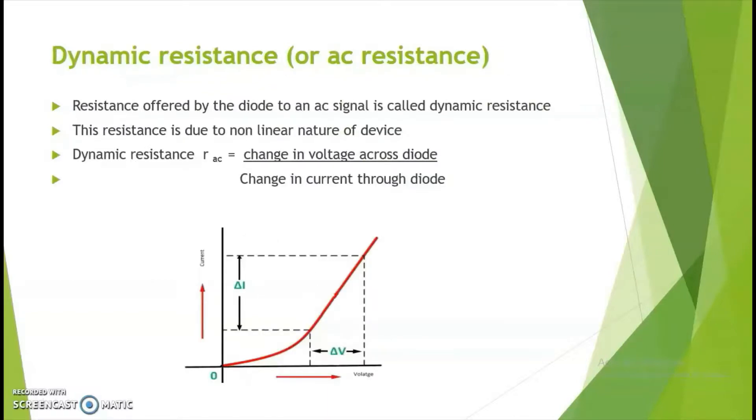Next, we have dynamic resistance or AC resistance which means that there is a change. It is represented by RAC and it is change in voltage across the diode to change in current. So, choose two points of voltage and the corresponding current values and we can get the change in voltage that is delta V divided by the change in current that is delta I in order to calculate RAC.